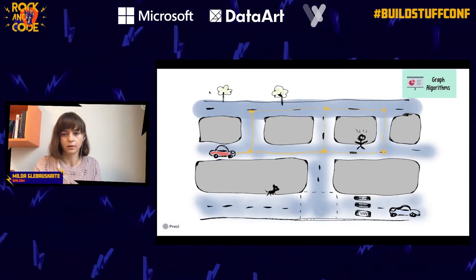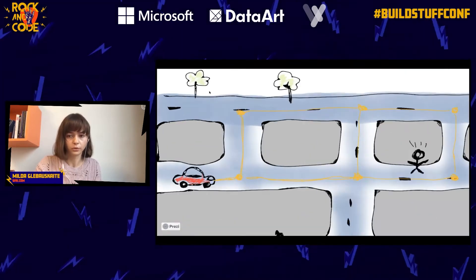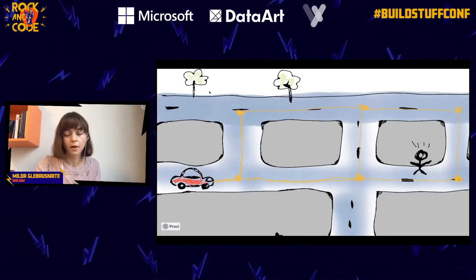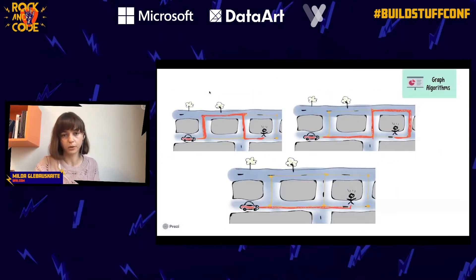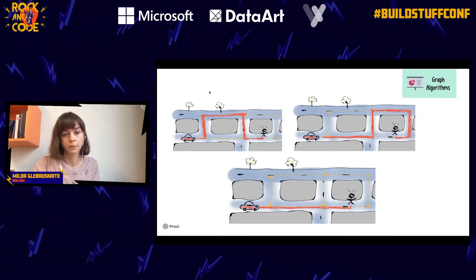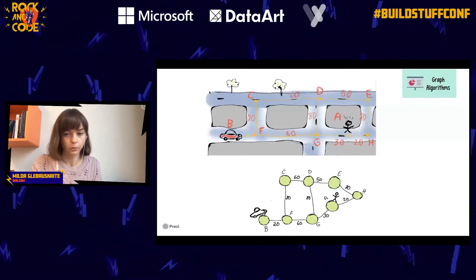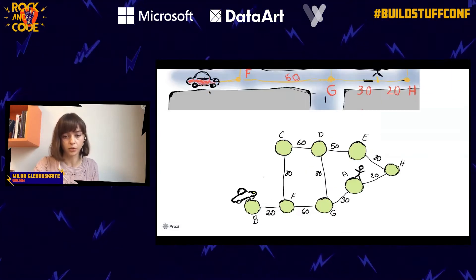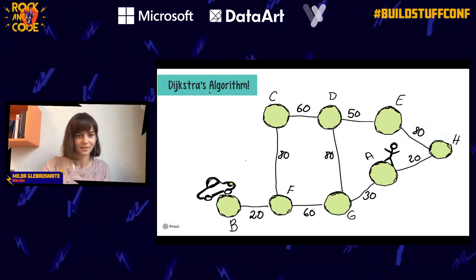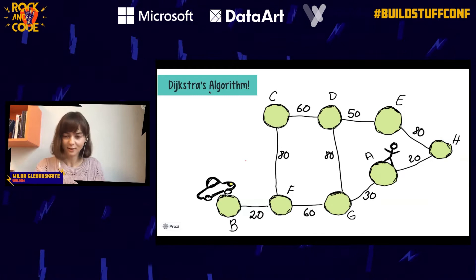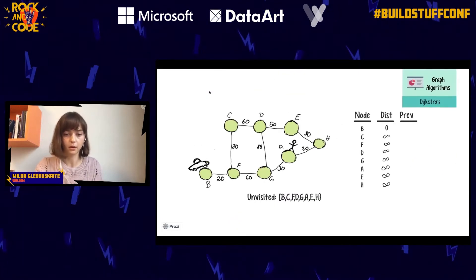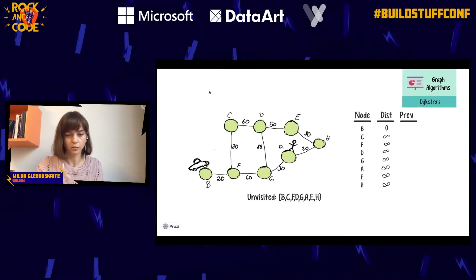The shortest path problem can be easily explained with a real-life example: Google Maps. We want to get from one point to another — say, from a car to a person, maybe an Uber — and there are multiple ways to reach the destination. How does Google know how to reach the person the quickest? This problem can be represented as a graph and solved by a graph algorithm called Dijkstra's algorithm.